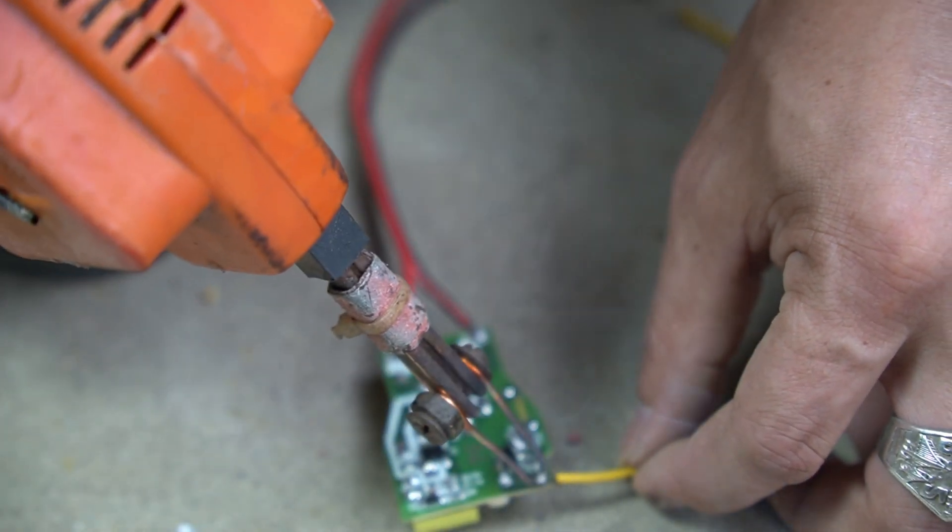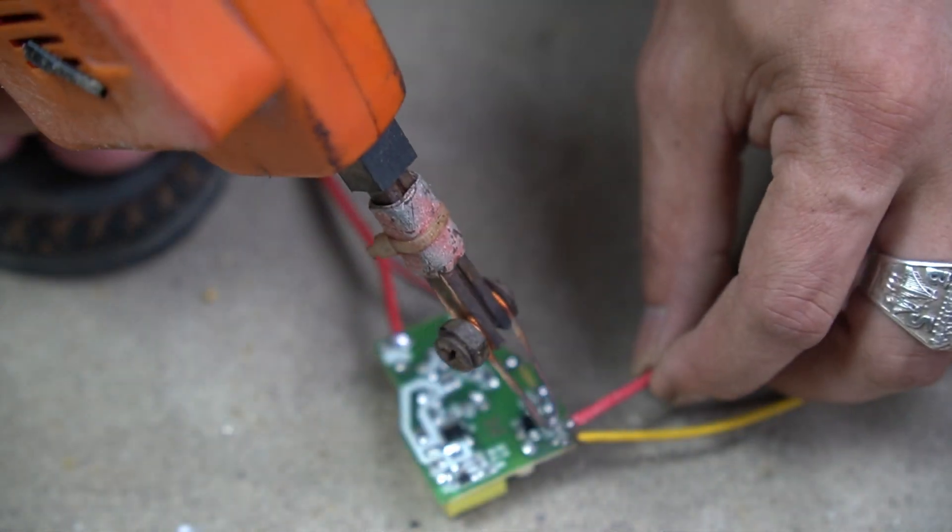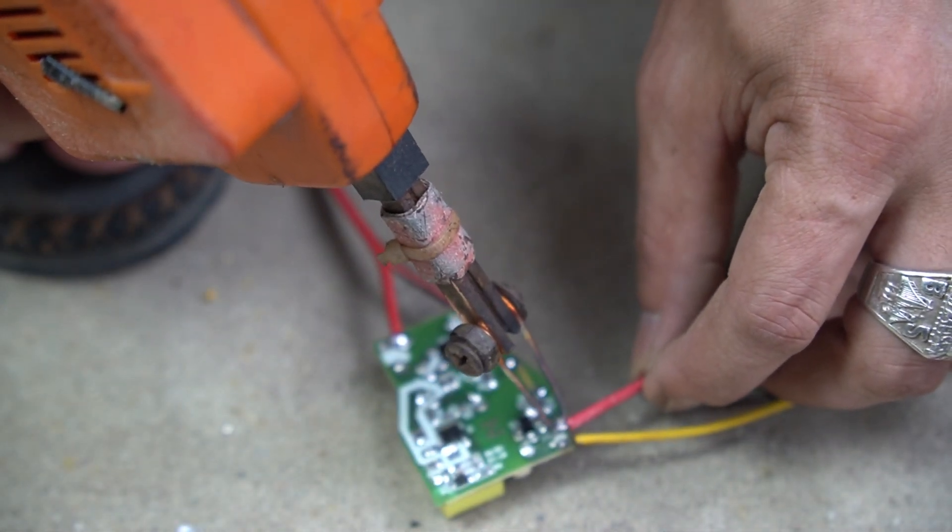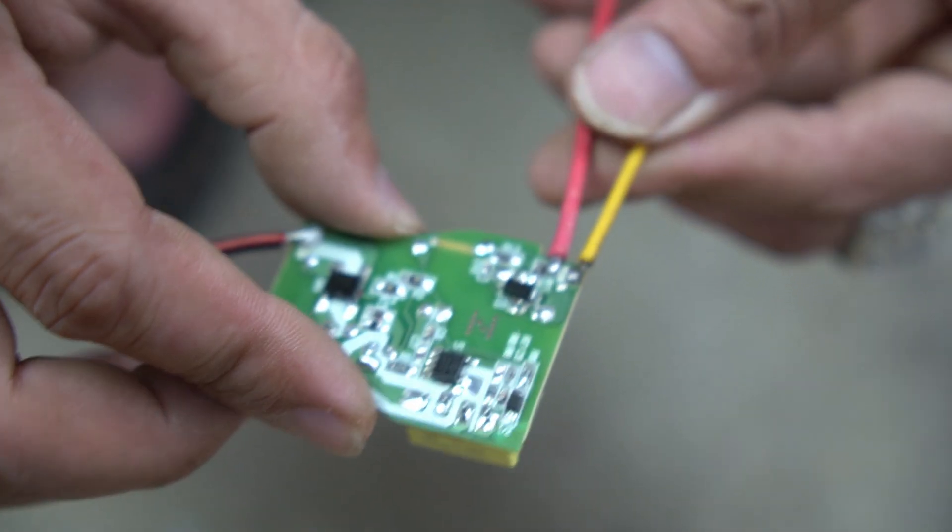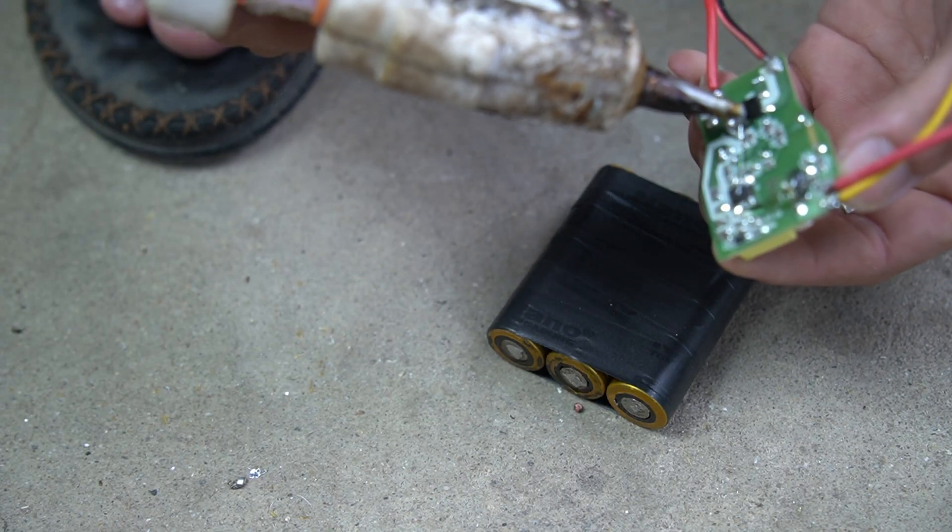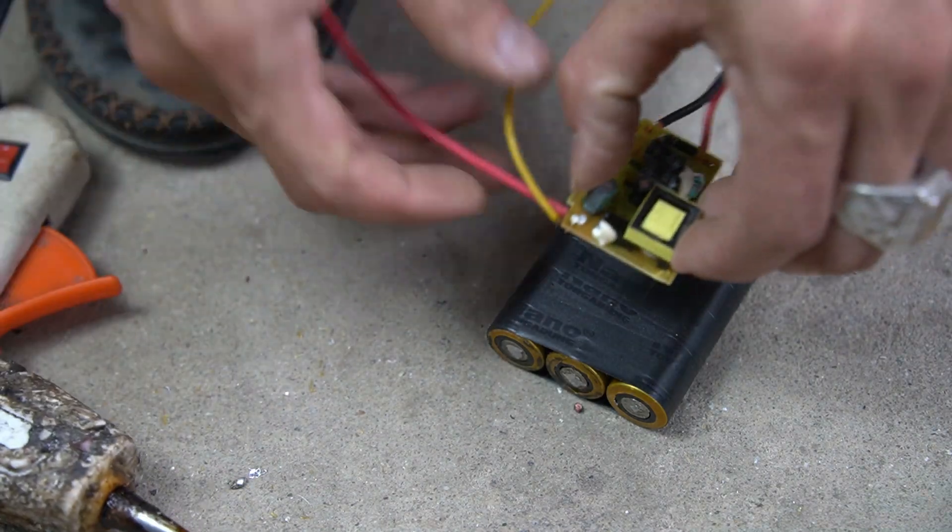Next, I will use two more wires to connect to the circuit. I use special glue to attach the circuit to the battery.